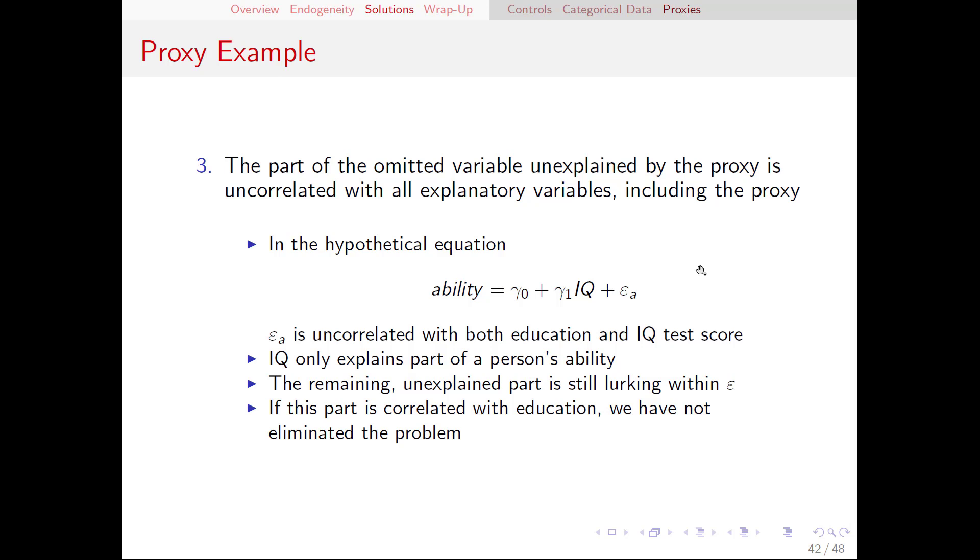And if that portion of ability, those other factors of ability that aren't IQ, are correlated with education, then we have only gotten rid of part of the endogeneity. We've only eliminated part of the bias and we've left some bias still out there. For this reason, sometimes we need to have multiple proxies to take care of all of these problems.